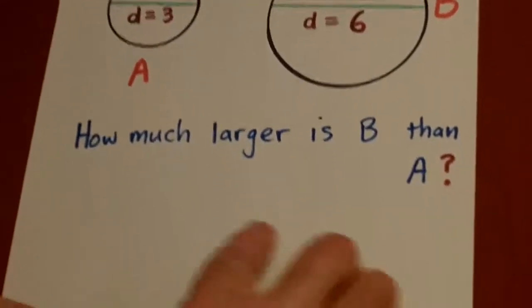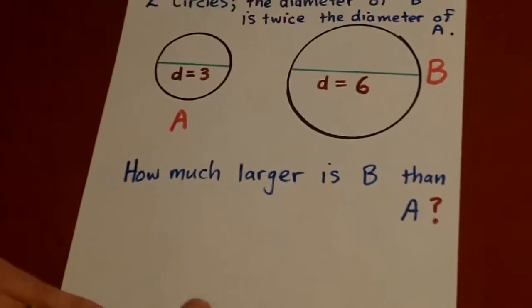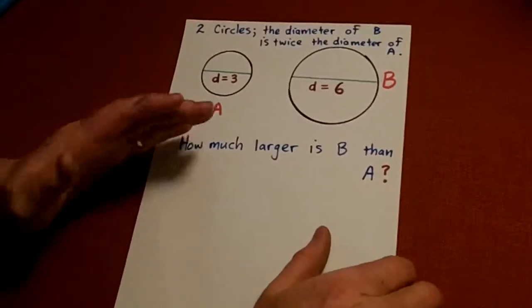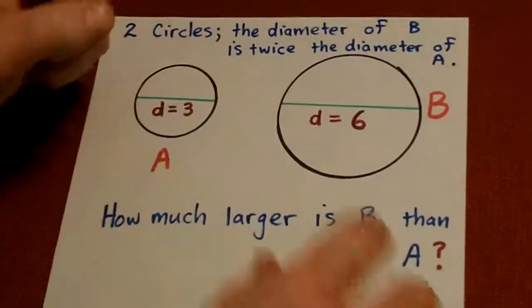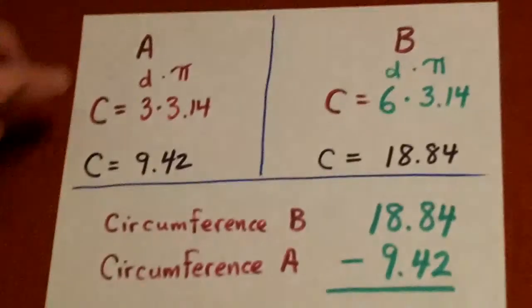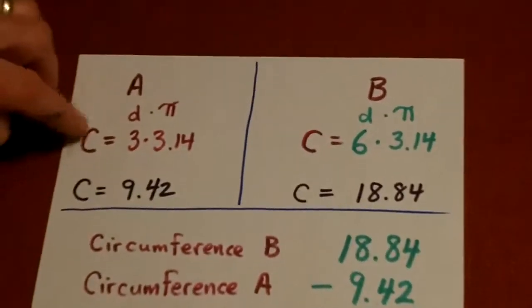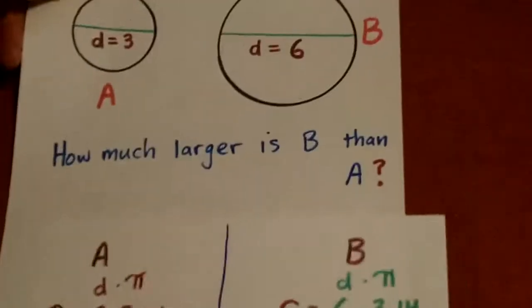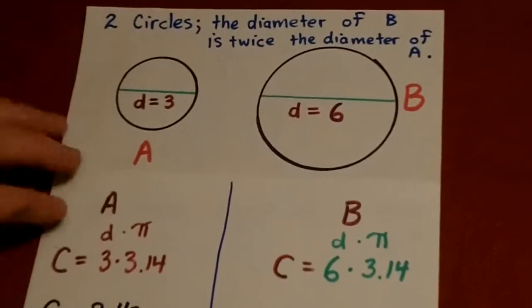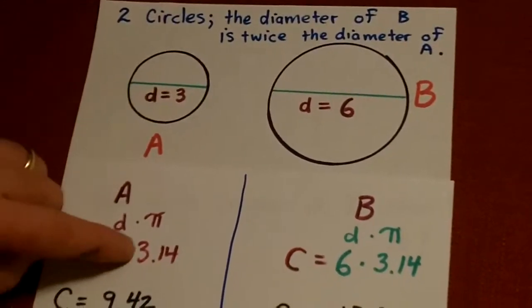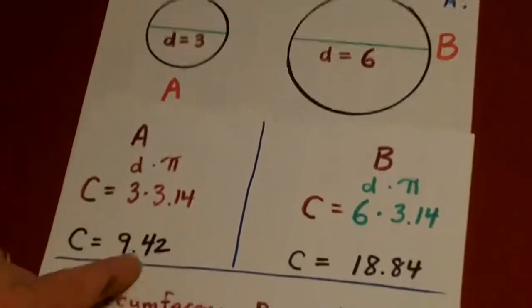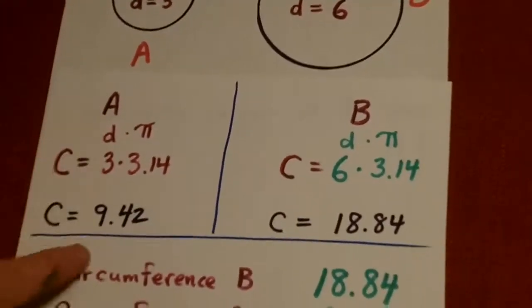Now, one of the multiple choice answers is going to be 2. And they're trying to get you to jump and to guess quickly and to guess 2, which is wrong. What you have to do is you have to figure out the circumference of A. If we figure out the circumference of A, it's simply 3 times 3.14, which is 9.42. The circumference of A is 9.42.